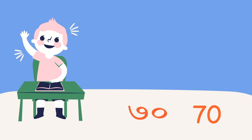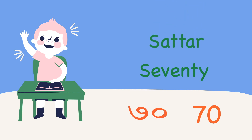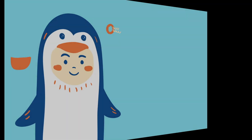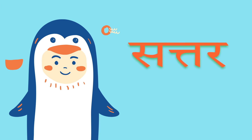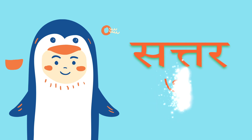Here comes seventy. Seventy in Hindi is 'sattar'. That's how we write it in Hindi — seven and zero, saath aur shunya — sattar.